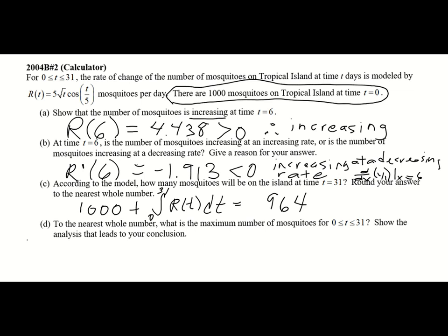Part D asks for the maximum number of mosquitoes for times 0 to 31 inclusive — show the analysis that leads to your conclusion. This is an absolute maximum. Absolute maximums can occur at endpoints or critical numbers, so we check mosquitoes at T equals 0, which is 1,000 from the prompt, and at T equals 31, which is 964 from part C. So the endpoint T equals 31 is not the maximum since we started with more.